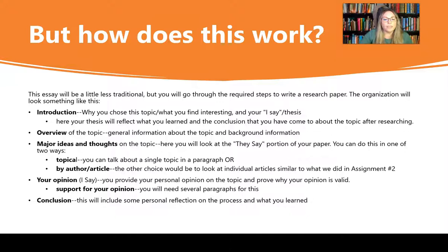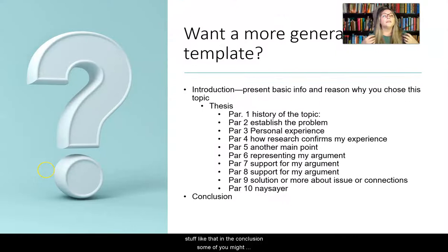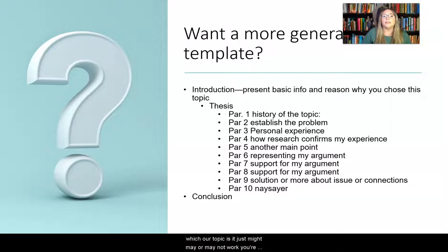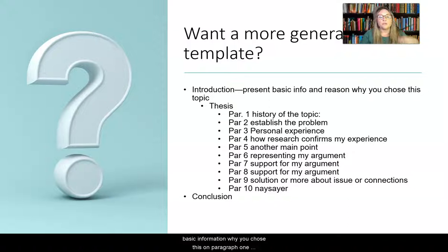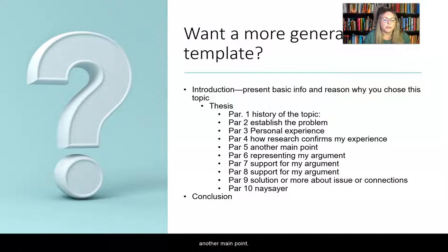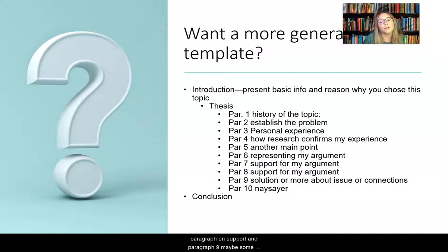Then you will need a conclusion, and there can be some personal reflections in the conclusion. Some of you might want a more solid template — this is a general outline, but it will not work for everyone depending on your topic. I'm happy to help if you want to make an appointment with me or with Katie. It could go something like: introduction, paragraph one history, paragraph two establish the problem, paragraph three personal experience, paragraph four how research confirms your experience, paragraph five another main point, paragraph six presenting the argument, paragraph seven support, paragraph eight more support, paragraph nine solution or connections, and paragraph ten the naysayer.